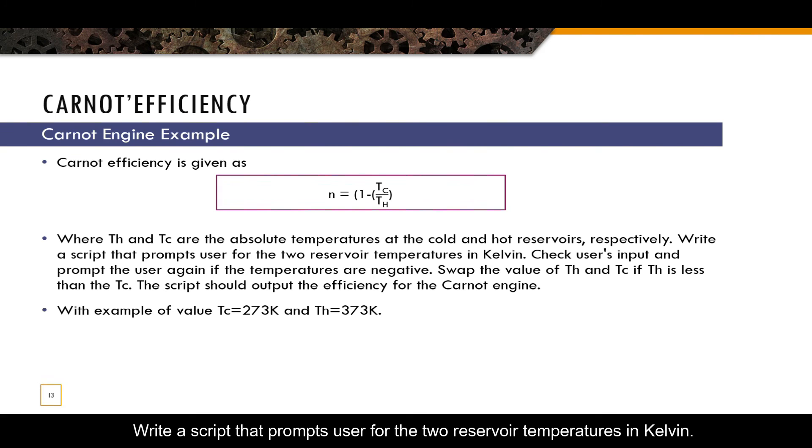Write a script that prompts user for the two reservoir temperatures in Kelvin. Check user's input and prompt the user again if the temperatures are negative. Swap the value of TH and TC if TH is less than the TC. The script should output the efficiency for the Carnot engine. With example of value TC equals 273 K and TH equals 373 K.